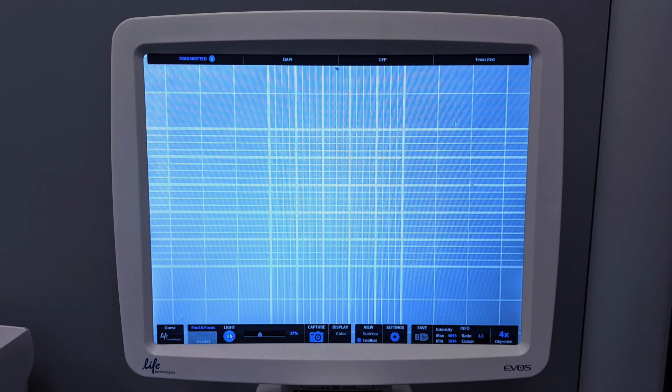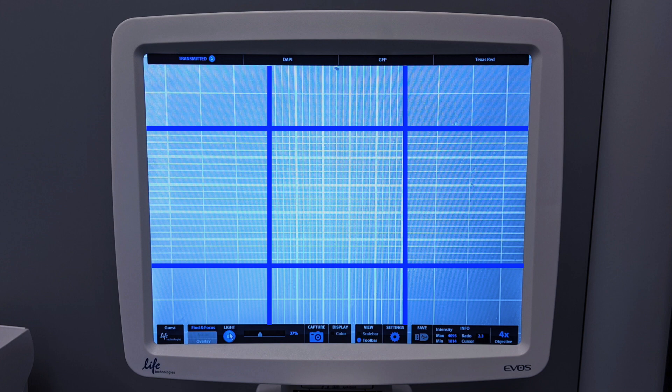The hemocytometer chamber is made up of nine equally sized squares arranged in a three-by-three pattern.